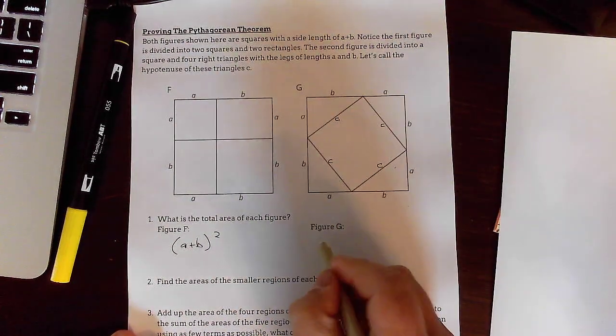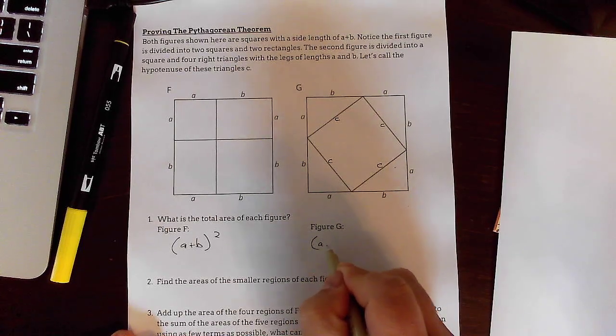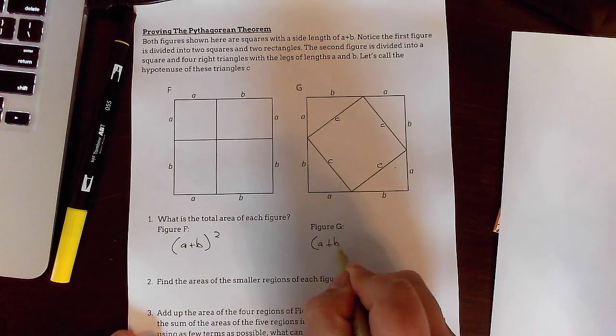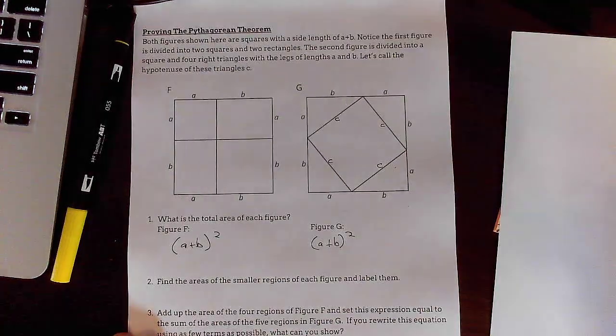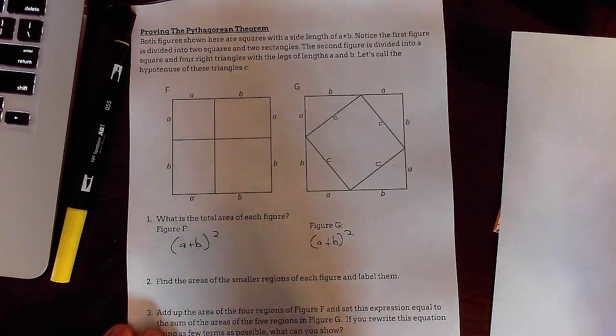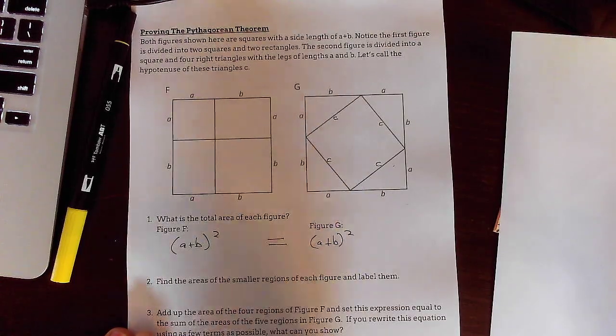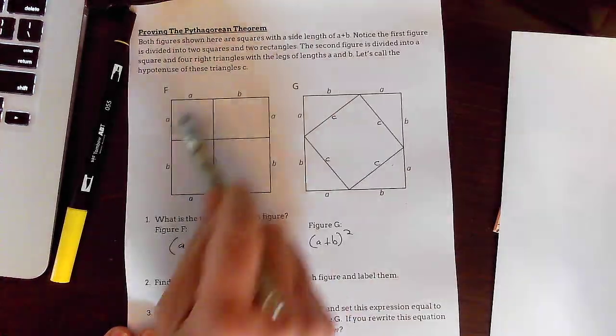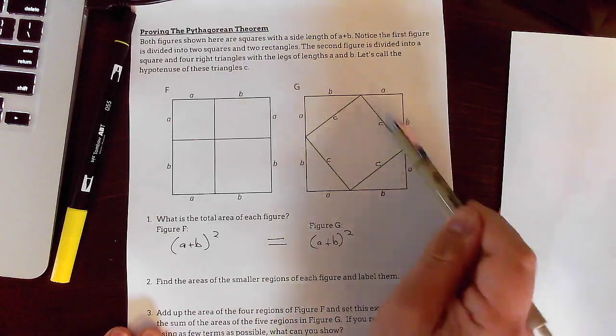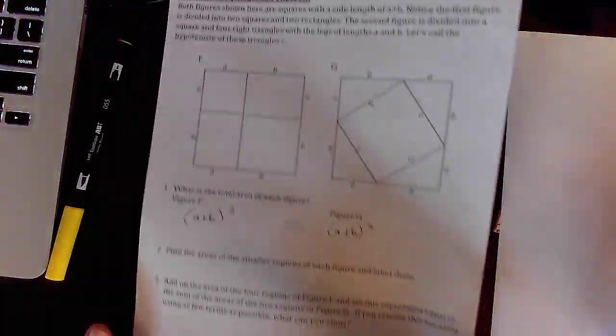But they're trying to call this B plus A? I'm not even going to bother with that. I'm going to call that A plus B squared. And I think the main point they want to get across is that these are equal. This big square is the same as this big square.